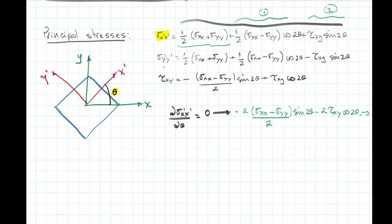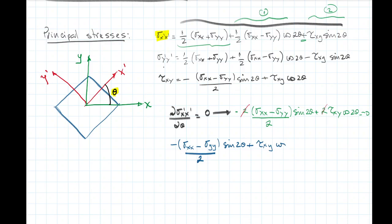Now, one thing I can do is take these two terms together — this is a plus here — and then use them as a common factor, sending it to the zero side. That equation is going to end up being: sigma_xx minus sigma_yy, divided by 2, times sine of 2 theta, plus tau_xy times cosine of 2 theta equals zero.